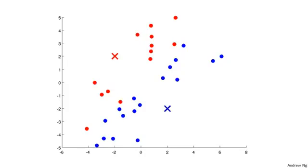That was the cluster assignment step. The other part of k-means in the inner loop is the move centroid step. What we're going to do is take the two cluster centroids — the red cross and the blue cross — and move them to the average of the points colored the same color. So I look at all the red points, compute the mean of their locations, and move the red cluster centroid there. The same thing for the blue cluster centroid: look at all the blue dots, compute that mean, and move the blue cluster centroid there.